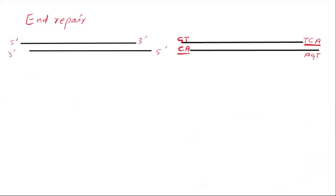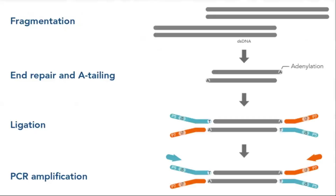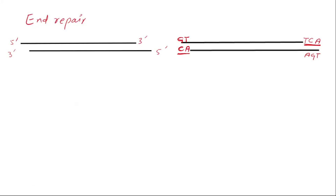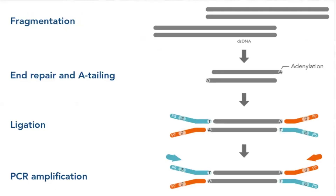For end repair: we have two strands of complementary DNA, but the ends are not perfectly aligned — these are called overhang ends. For example, if GT is on one strand, A and C form against it. End repair makes these blunt ends. Similarly for the other end: AGT is present and we make complementary thymine, cytosine, and adenine against it. After end repair we have blunt ends.